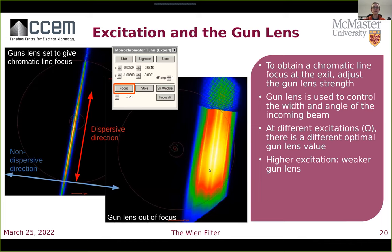At a low excitation, the gun lens needs to provide a strong focusing power to give the entrance of the mono a convergent beam. At an excitation of approximately π/2 or 1.6, the gun lens provides approximately a parallel beam from the emission cone of the tip. At a high excitation, only a weak gun lens is needed to provide a slightly divergent beam. When the gun lens — listed as mono focus in the alignments — is set perfectly, the user should see a very sharp dispersed line. When it's away from the perfect strength, the beam broadens in the non-dispersive direction and shrinks in the dispersive direction as we move toward having an achromatic image of the mono entrance aperture.